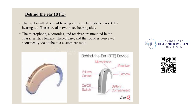Behind the ear — the next smallest type of hearing aid is the BTE. These are also two-piece hearing aids. The microphone, electronics, and receiver are mounted in a curved, banana-shaped case, and the sound is conveyed acoustically via a tube to a custom hearing aid mold.